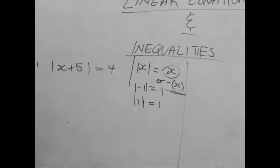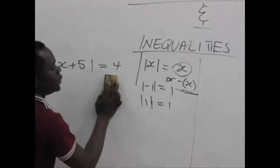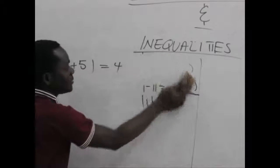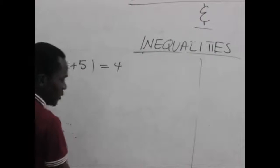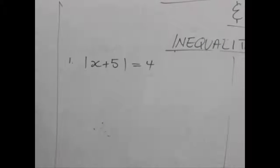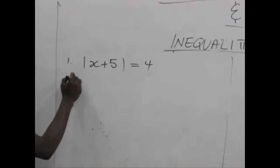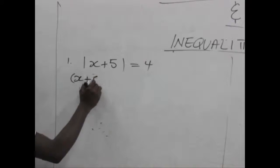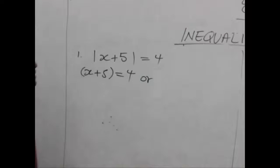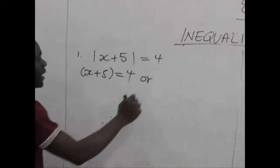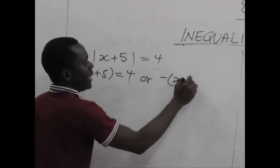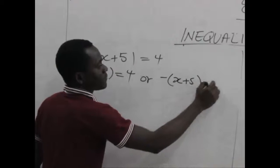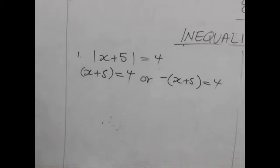With that in mind, we can work our equations concerning absolute values. We are going to get two solution sets because of the absolute value. So we pick the positive side, which will be x plus 5 equals 4, and at the same time we pick the negative aspect, which will be negative x plus 5 equals 4.